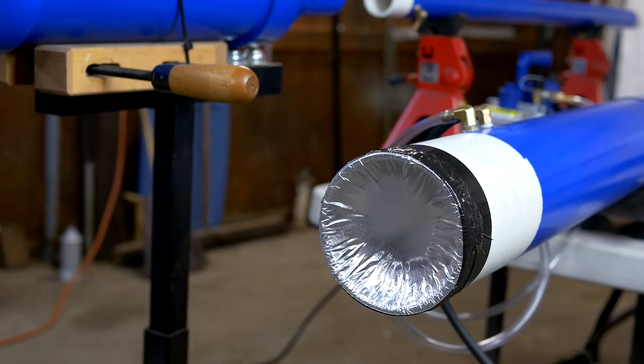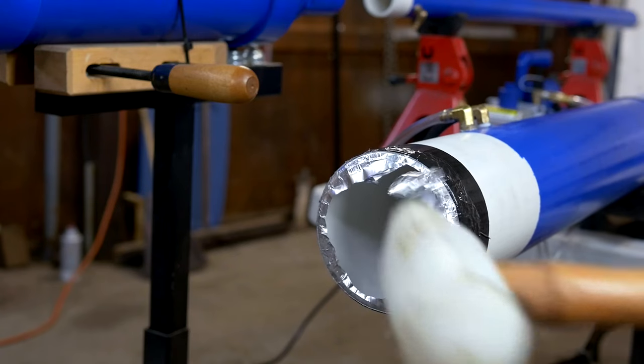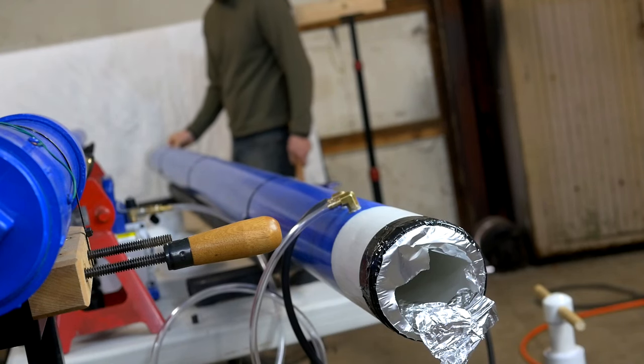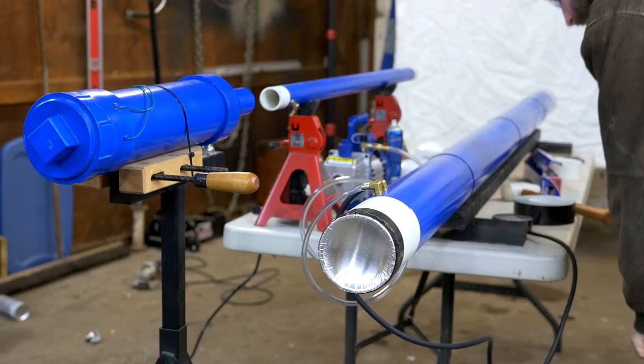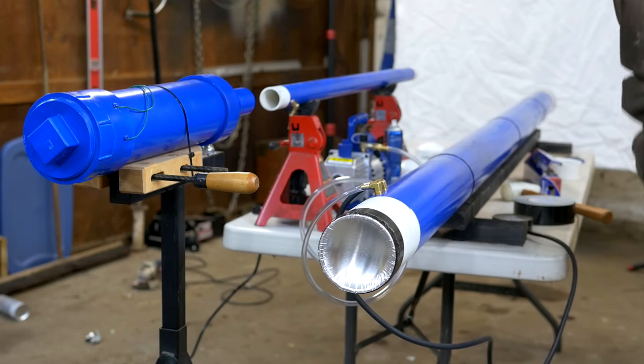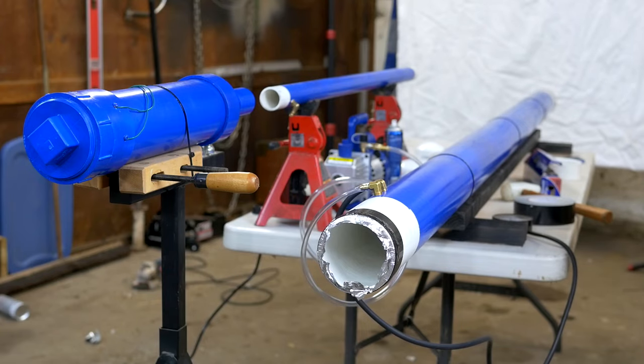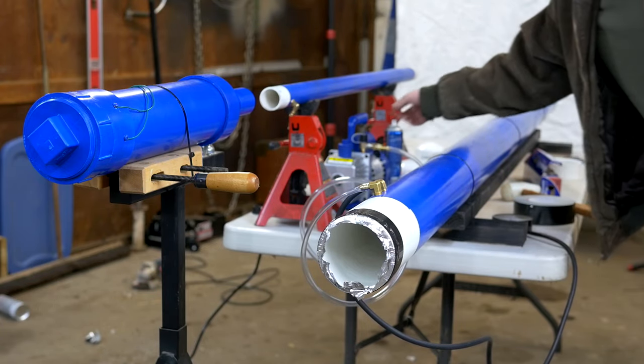My first tests with this cannon were with no projectile loaded, as this is the largest I've ever made and I was a little nervous about how powerful it might be. Test one used only a single layer of foil as the burst disc, and you're about to see why that was a bad idea. The foil could not withstand the pressure, and the cannon fired on its own.